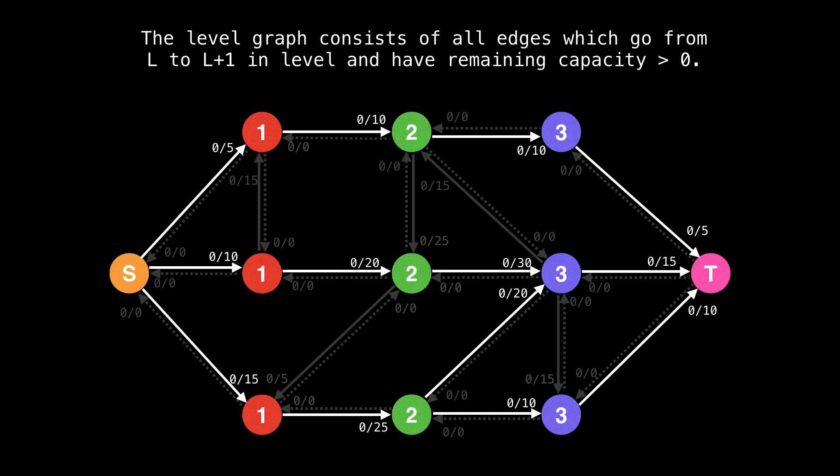Now, if we focus on the edges which form the level graph, we can see that they are all edges which go from L to L plus one in level and have a remaining capacity greater than zero.